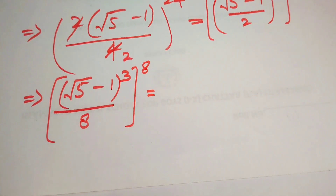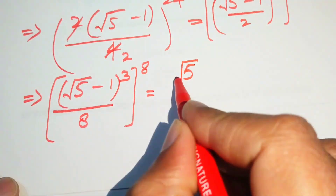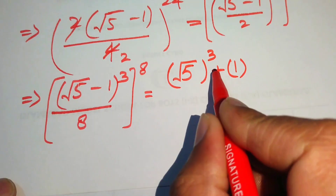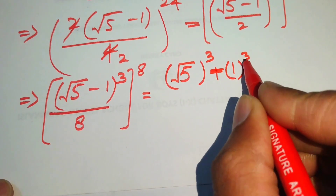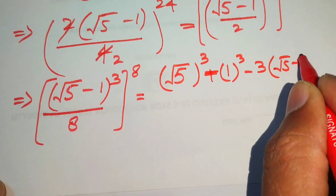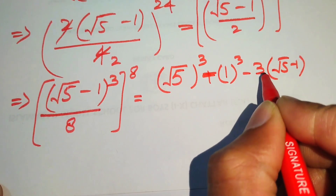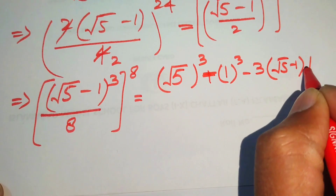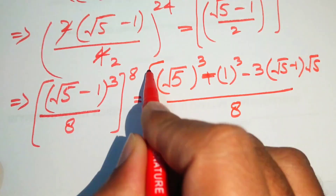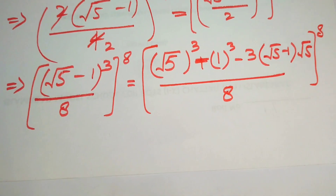The cubic formula for (a − b)³ gives: a³ − b³ − 3ab(a − b). Applying this to (√5 − 1)³ over 8, raised to the power of 8.